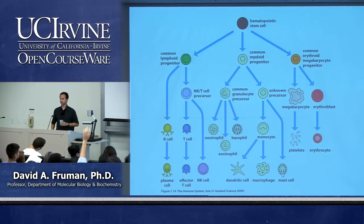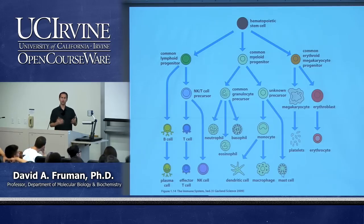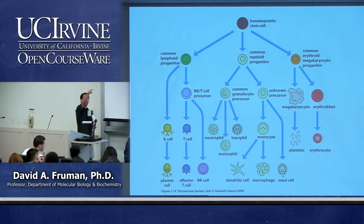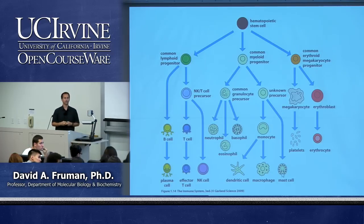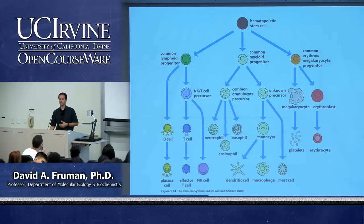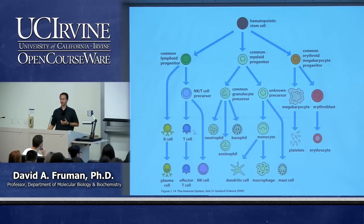Q&A: Histamine is a secreted product responsible for allergic symptoms — making your nose run, skin itch, and causing allergy symptoms generally; antihistamines block those effects. On T cell subtypes: effector T cells are activated versions of helper and CTLs. When T cells recognize antigen, they develop the ability to secrete cytokines or kill other cells through proliferation and clonal expansion into effector T cells. Regulatory T cells act on both dendritic cells and T cells to prevent activation, guarding against autoimmune disease. Without regulatory T cells, humans develop a rapidly fatal autoimmune disease.